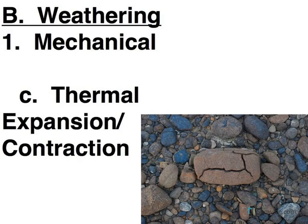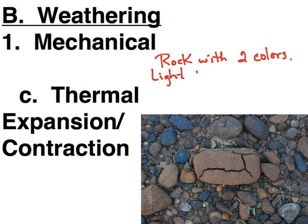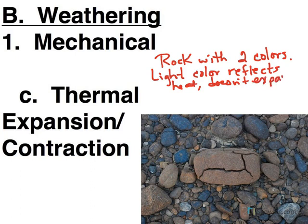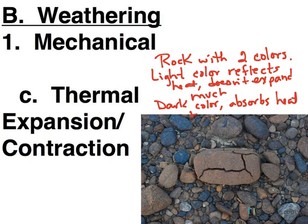Thermal expansion and contraction typically occurs when you have a rock with two colors. The light color reflects sunlight, so it doesn't expand much. If there's a dark color, it absorbs the heat and expands. So these two rates of expansion can lead to your rock breaking apart.